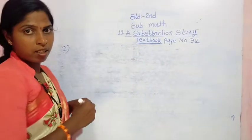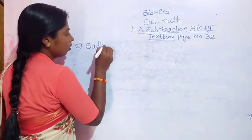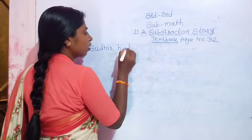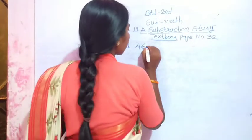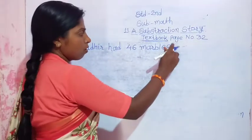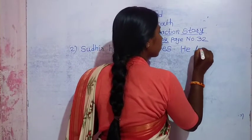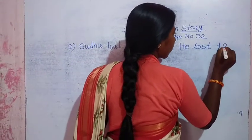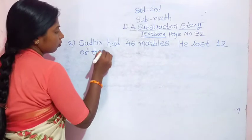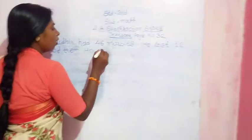Like these examples, in your notebook. Sudhir had 46 marbles. He lost 12 of them. How many does he still have? How many marbles remain?